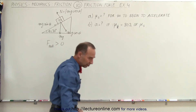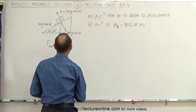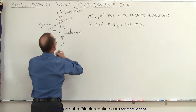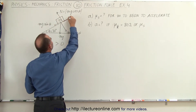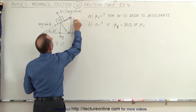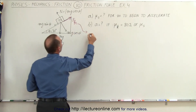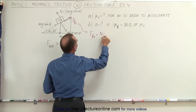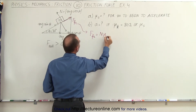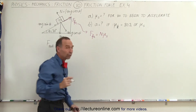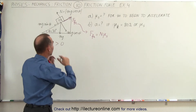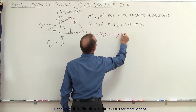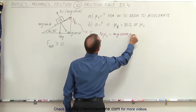And then we have the friction force. Since without friction the object will slide down the incline, the direction of the friction force will be in the opposite direction. The equation for the friction force by definition is equal to the normal force times mu. In this case we use the static coefficient of friction because the object is stationary at this moment, which gives us mg cosine of theta times mu sub s.